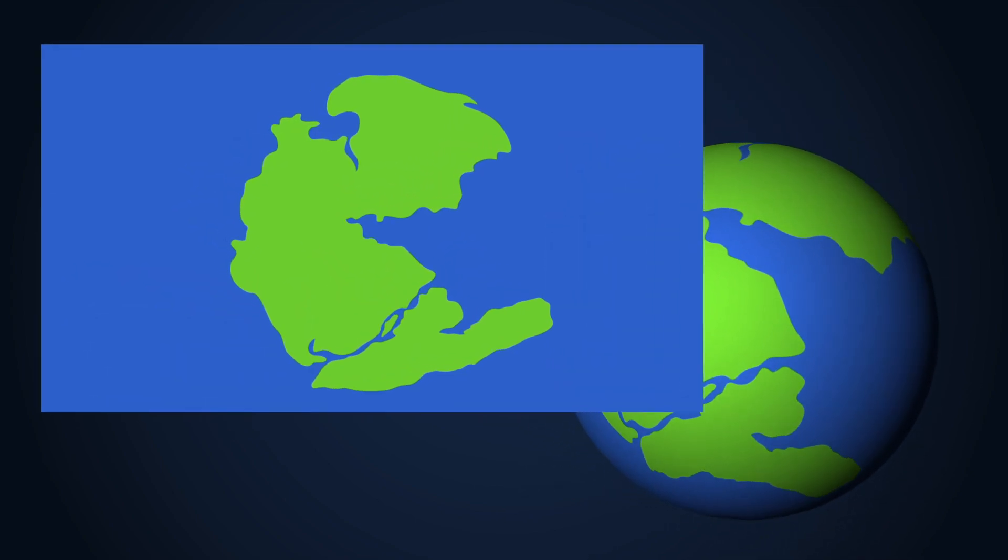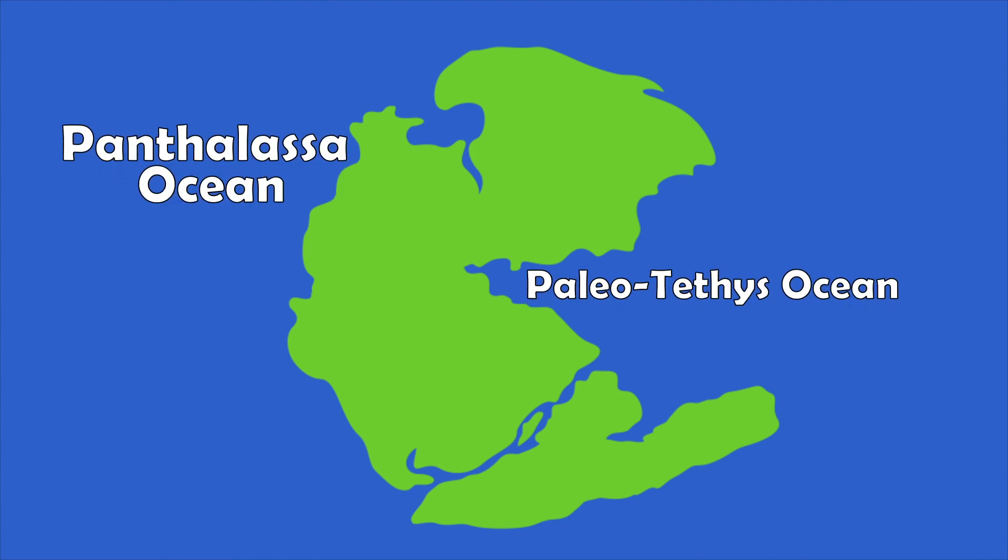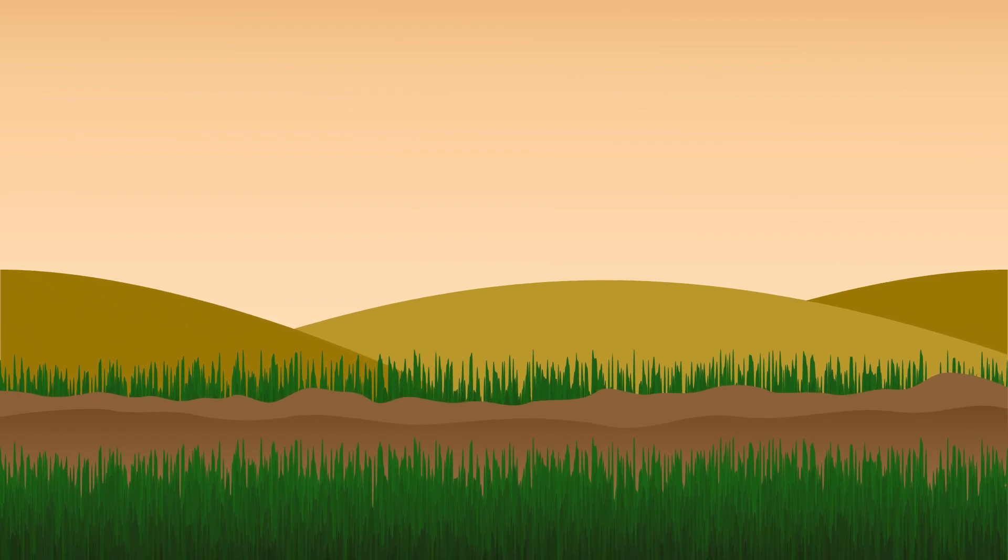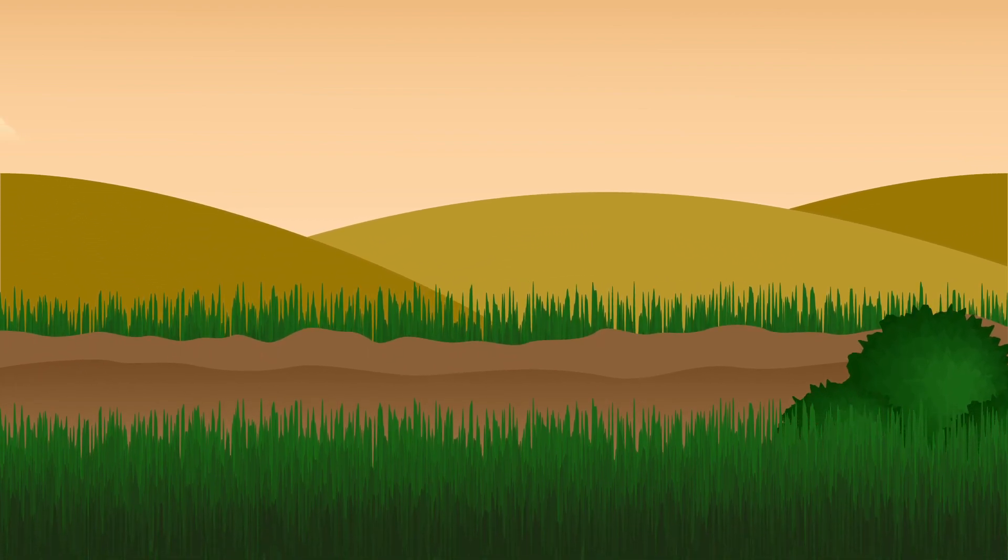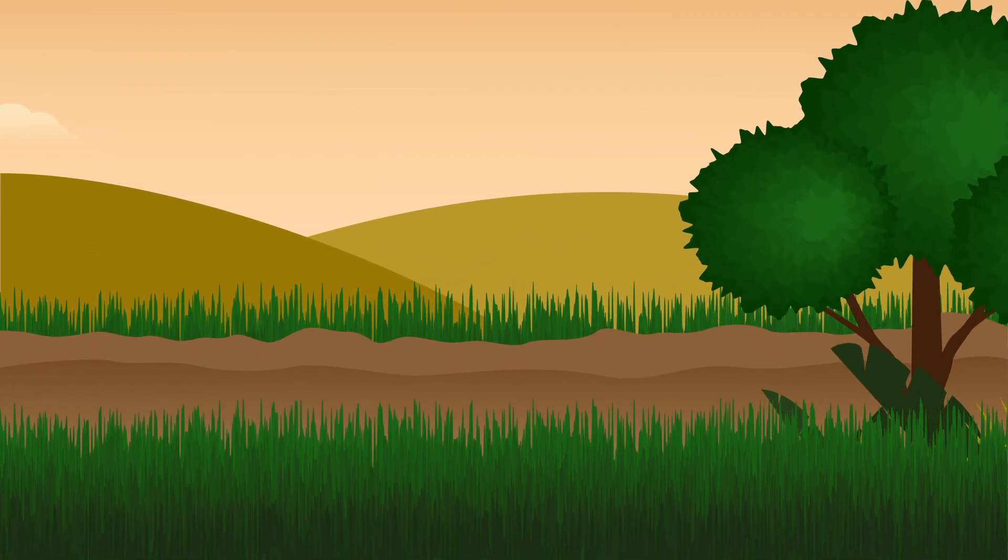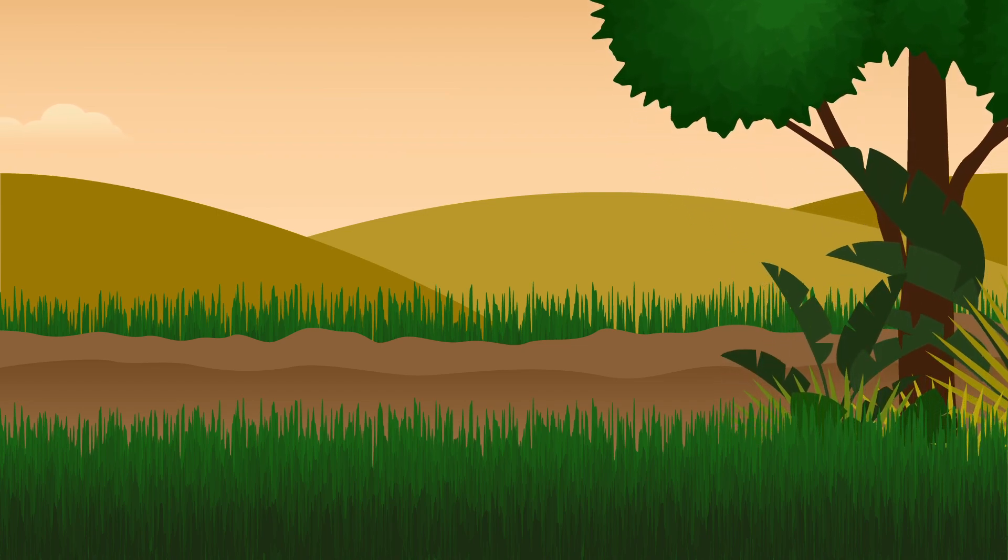Pangea was also surrounded by three primary oceans: the Panthalassa Ocean, the Paleo-Tethys Ocean, and the Tethys Ocean. Having formed from previous continental clusters, Pangea is where the stepping stones of life would proliferate and evolve to what we see today.